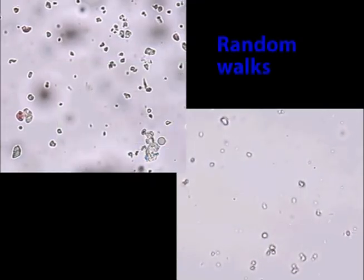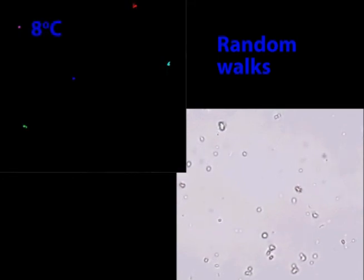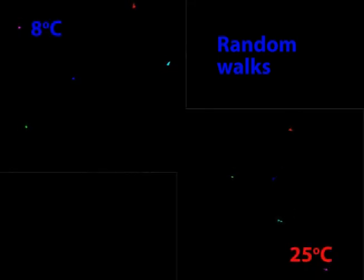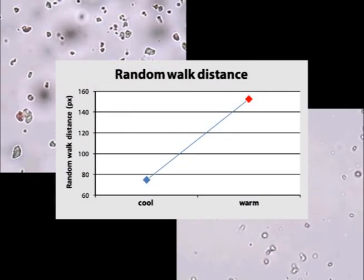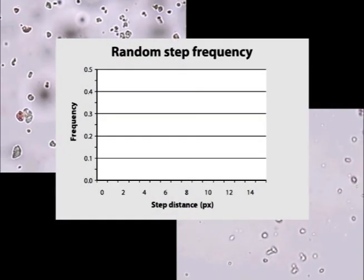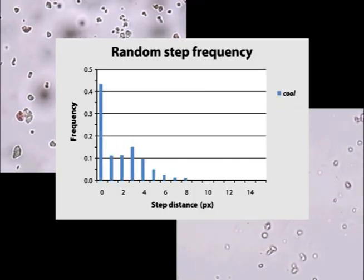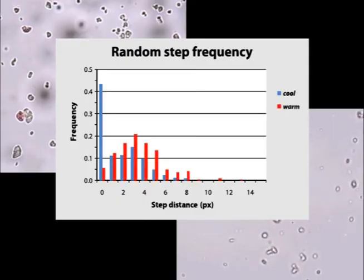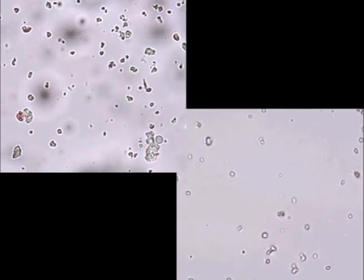We can also track how temperature affects the random walks. Here are tracks from five cool particles, and here are five tracks from five warm particles. It's obvious that random walks are longer when they are hotter. Clearly, the average distance traveled is greater when the system is warmer. When the system is warm, longer steps are more frequent than when it is cool. This makes sense — temperature is essentially random thermal motion. Increase the temperature, and the thermal motion increases, and with it the Brownian motion as well.